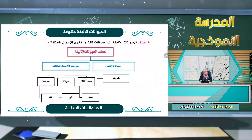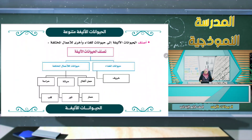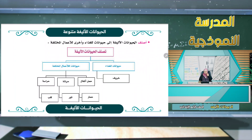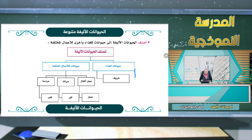نصنف الحيوانات الأليفة إلى نوعين: حيوانات نربيها للغذاء، وحيوانات نربيها لأعمال أخرى.